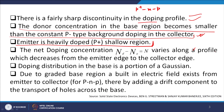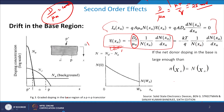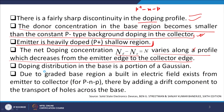The net doping concentration ND minus NA varies along a profile that decreases from the emitter edge to the collector edge. Since NA is constant and ND is falling from one edge to the other, the net doping profile ND–NA runs parallel to ND between those two points — it is maximum at the emitter edge and minimum at the collector edge.